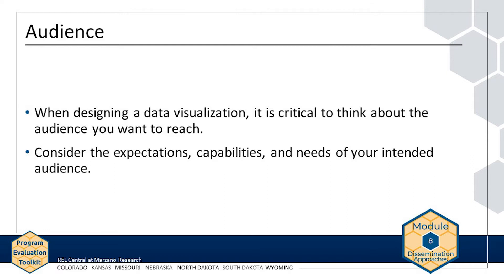To consider the audience, ask the question: who needs or wants to learn more about your data and findings? Once you have identified the intended audience, think about their expectations, capabilities, and needs so that you can design a data visualization that effectively communicates your message. First, what does your audience care about? How much information would they like to have? What do they expect to see in the data visualization? It is not always necessary to share every piece of information that you gather in your evaluation. For example, in the AMP evaluation, it may not be important to caregivers to know the numbers of students attending the program, but this information may be vital to the funder. Thinking about what the audience cares about and what data they want to see will help guide your decisions about what to include in a data visualization.